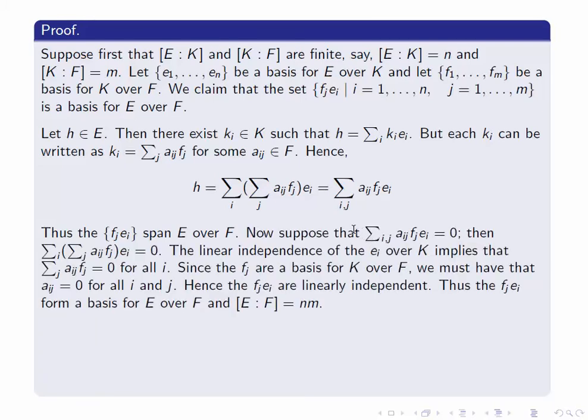Now let's look at the linear independence part. To prove linear independence, we take an arbitrary F-linear combination of these elements fⱼeᵢ and suppose it equals zero. Our job is to prove that all the aᵢⱼ are zero. So suppose we have such a linear combination: Σᵢ,ⱼ aᵢⱼfⱼeᵢ = 0, where the aᵢⱼ are in F. We rewrite this double summation as Σᵢ(Σⱼ aᵢⱼfⱼ)eᵢ = 0.